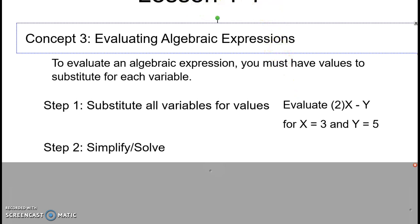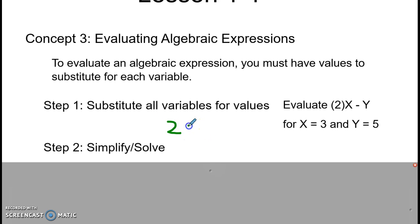the first step is going to be to rewrite the problem with the variables substituted for values. So we would have 2 times, instead of X, we're going to substitute in 3, minus, instead of Y, we substitute in 5.